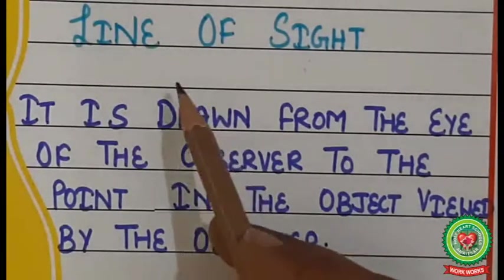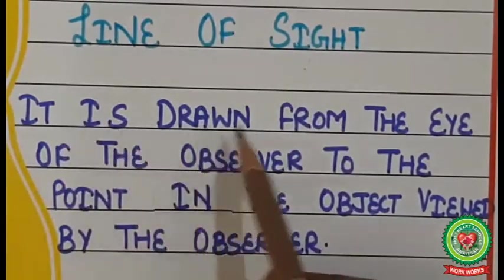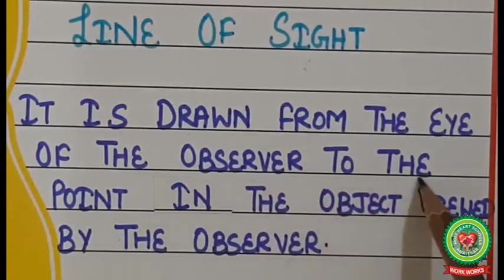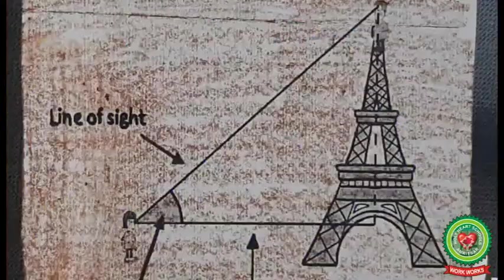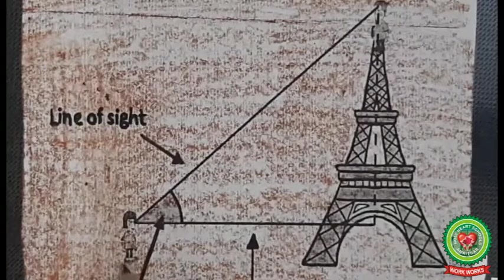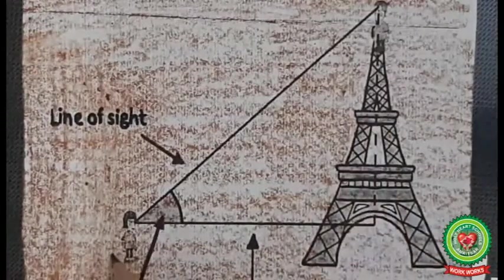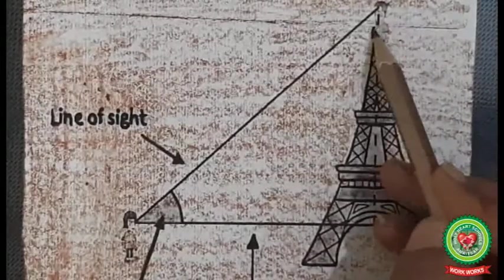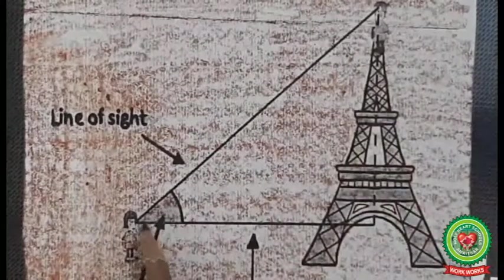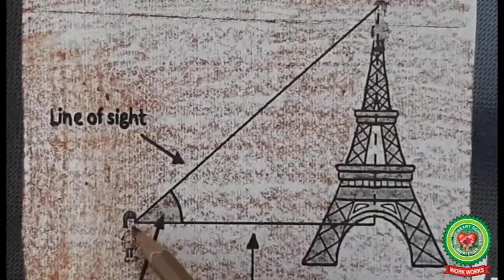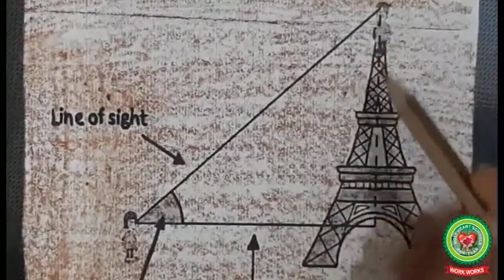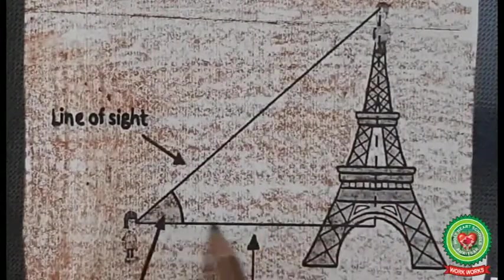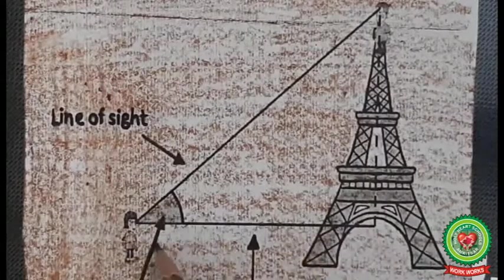Let's start with the first term, which is the line of sight. The line of sight is drawn from the eye of the observer to the point at which the object is viewed. For example, an observer is standing on the ground level looking towards a tower. The line drawn from the eye of the observer to the top of the tower is the line of sight. The horizontal line represents the distance between the observer and the object.